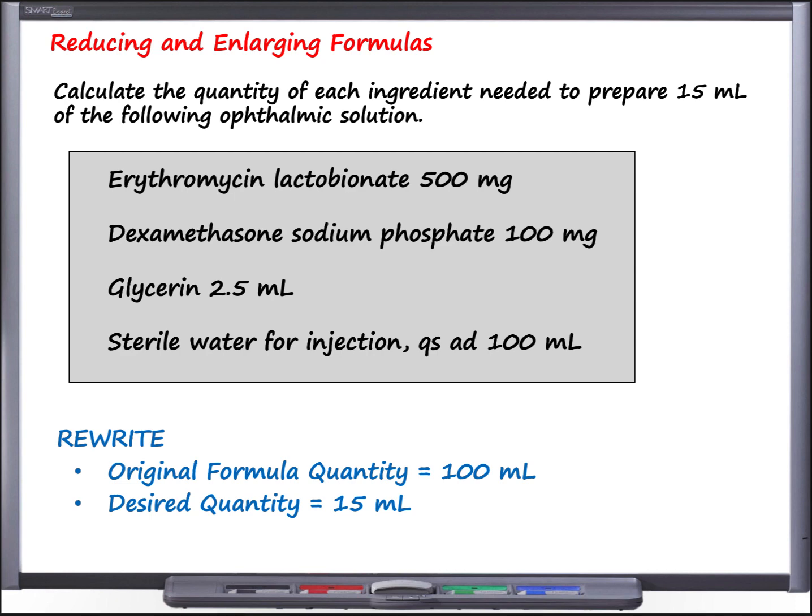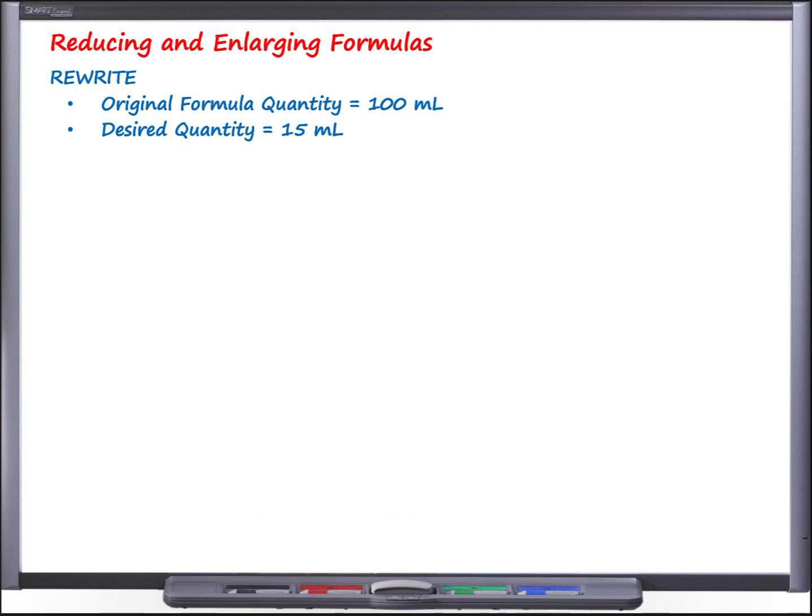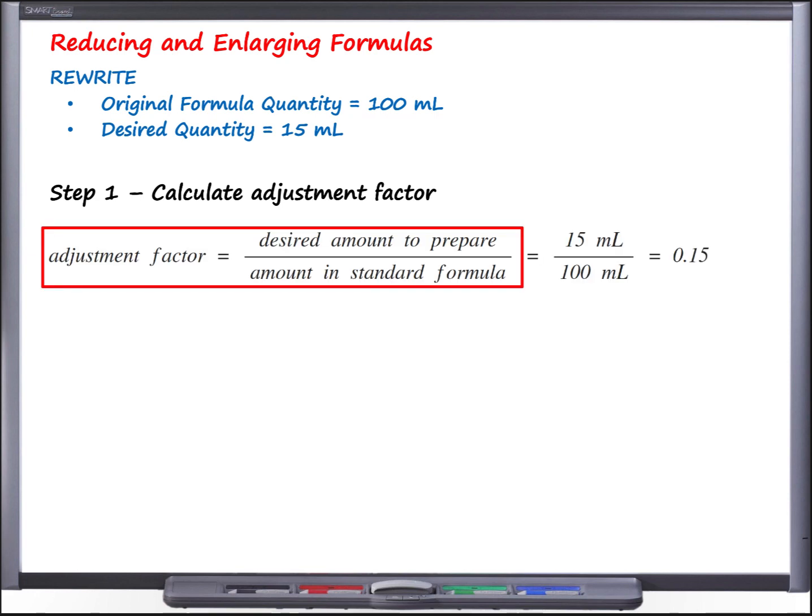Going back to the formula, what we want to do is create enough for one patient, so we need 15 milliliters. But the formula we have has the ingredients of erythromycin, dexamethasone, glycerin, and sterile water. You'll notice going down to the bottom for sterile water, it is QSAD for up to a total amount of 100 milliliters. So the formula I have is to prepare 100 milliliters of this ophthalmic solution, but I don't need near that amount. I only need enough for one patient, which would be 15 milliliters. The original formula quantity was 100 milliliters, but our desired quantity is only 15 milliliters, so we're going to need to reduce this formula. We'll start by calculating our adjustment factor by taking the desired amount that we wish to prepare, which is 15 milliliters, and dividing it by the amount in the actual formula, which was 100 milliliters, and doing that we get an adjustment factor of 0.15.